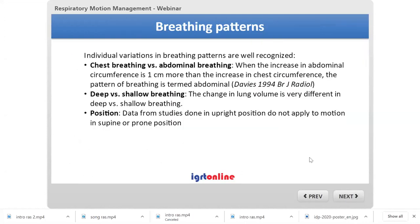Breathing patterns are different between individuals — there is chest breathing versus abdominal breathing, where more obese people often do more abdominal breathing. There is also deep versus shallow breathing, with different changes in lung volume. Importantly, data from studies done in the upright position do not apply to motion in the supine or prone position, so fluoroscopic data from upright lung cancer studies do not apply in the supine treatment position.